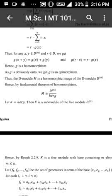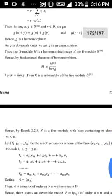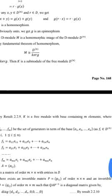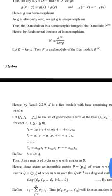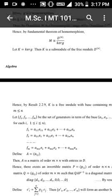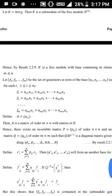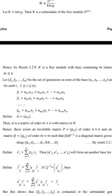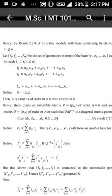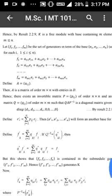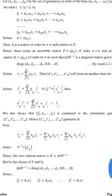Now kernel of g is a submodule of the free module D raised to n. By the earlier theorem, kernel of g is a free module with basis containing m elements where m ≤ n. Let f1, f2, ..., fm be the basis elements, expressed in terms of the basis e1, e2, ..., en. Since fi belongs to D raised to n for each i, we write fi = (a1i, a2i, ...) and define A = (aij), a matrix of order m cross n with entries in D. From this we obtain the fundamental structure theorem.